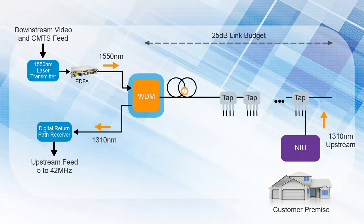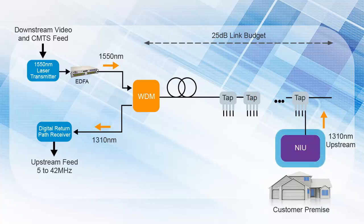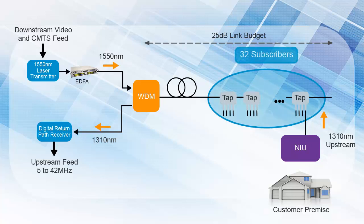Instead of entering a node in the field, the signal is fed directly into a tap where a portion of the optical energy is output on the drop fibers and the remainder continues on to the next tap. At the subscriber network interface unit or NIU, the downstream optical signal is converted to the RF spectrum and distributed just as in traditional HFC systems. In the upstream, the NIU converts RF input from subscriber equipment to the 1310 nanometer optical spectrum and transmits back to the head-end, where it is fed into the analog receiver and converted back to the RF spectrum. Up to 32 subscribers can be served by a head-end feed architecture depending upon the distance to the subscribers and the optical budget.